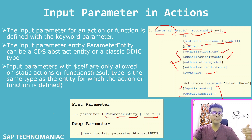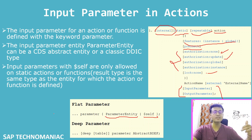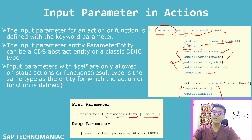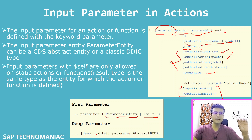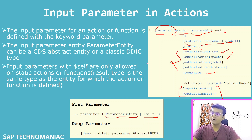Regarding the deep parameter: a deep parameter means you have a structure with some fields, and one of those fields is either an internal table or another structure. The deep parameter can be of type table. We can have multiple instances of that particular deep structure, or we can have a simple deep structure as well.